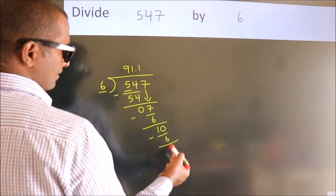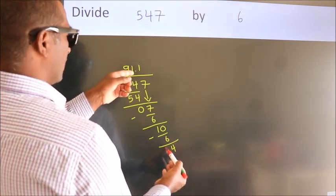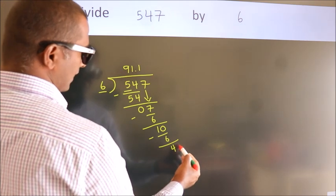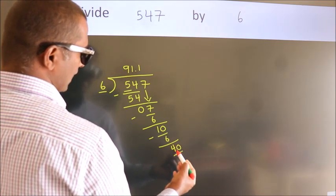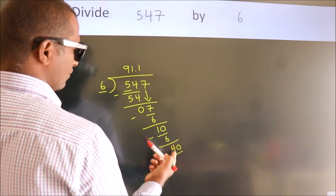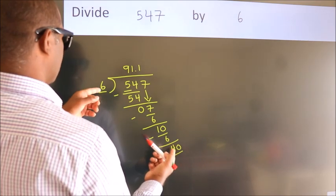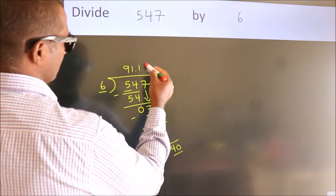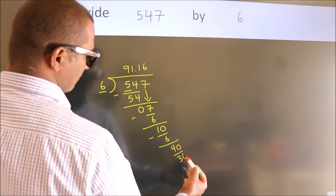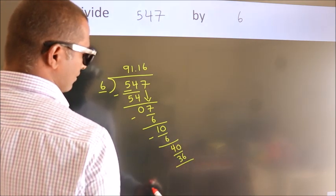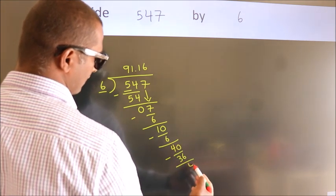After this, we already have the decimal, so directly take 0. So, 40. A number close to 40 in the 6 table is 6 sixes, 36. Now we subtract and get 4.